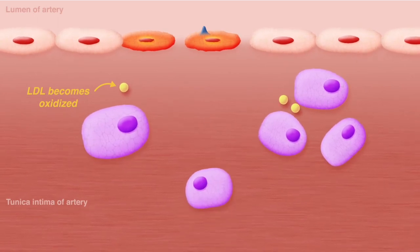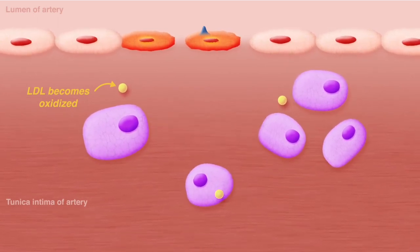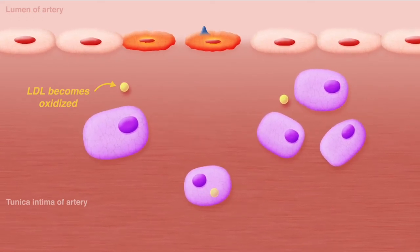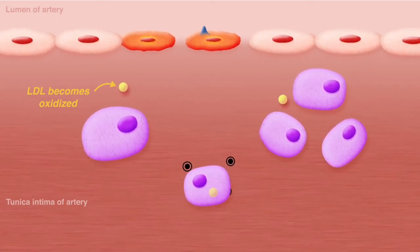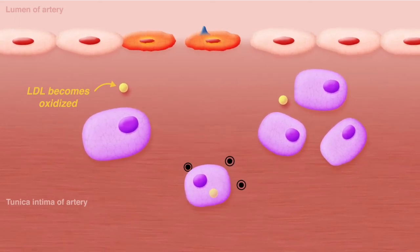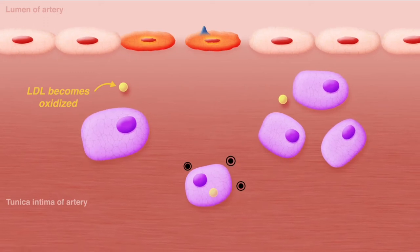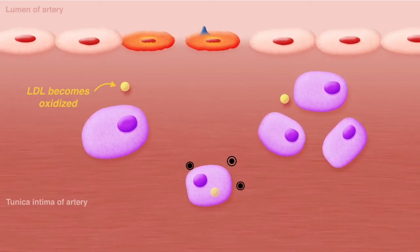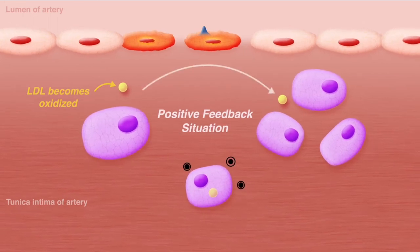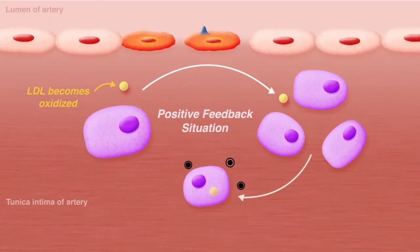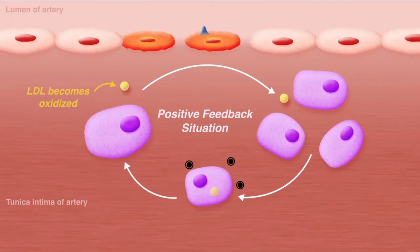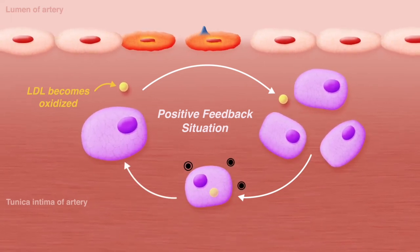White blood cells then engulf the modified LDL particles, which stimulates them to produce even more oxygen free radicals. It becomes easy to imagine that an area of endothelial damage will lead to an accumulation of modified LDL particles and migrating white blood cells. A positive feedback situation begins to arise when accumulating immune cells and modified LDLs bring in even more immune cells and modified LDLs.